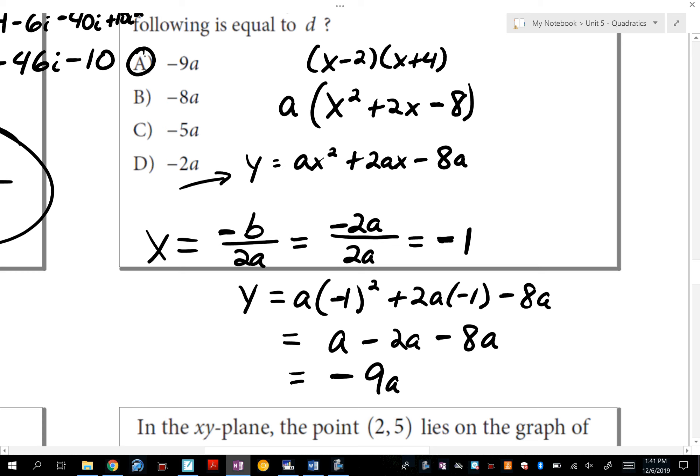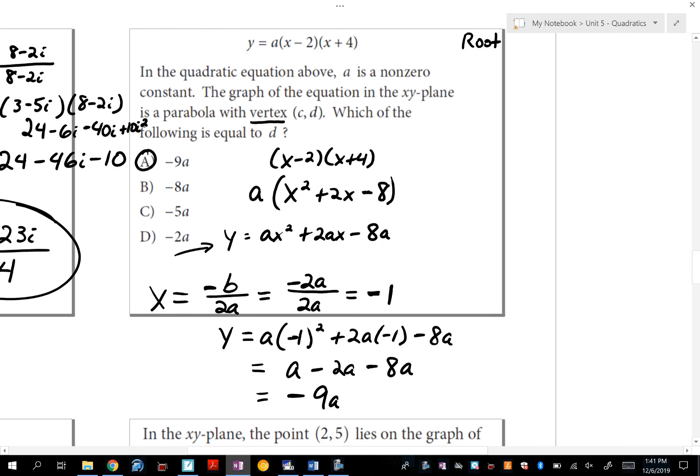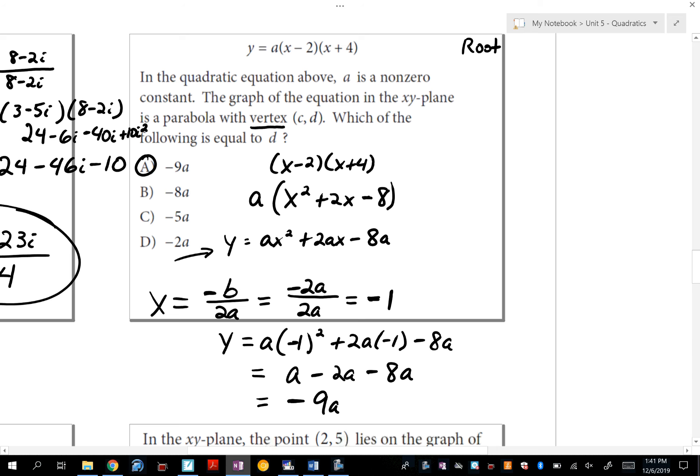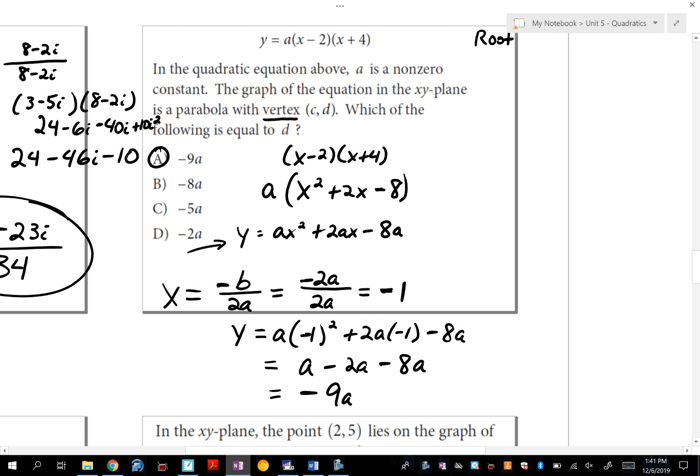You plug it in to this guy. So we have y equals a times negative 1 squared plus 2a times negative 1 minus 8a. What's negative 1 squared? Positive 1. So that's just going to be a minus 2a. And you bring down a minus 8a. So what is that? It's negative 9a. And we have done it. Wow. SAT, what up? That was some serious work there. Man, I hope they're that good. Because wow, that was incredible.